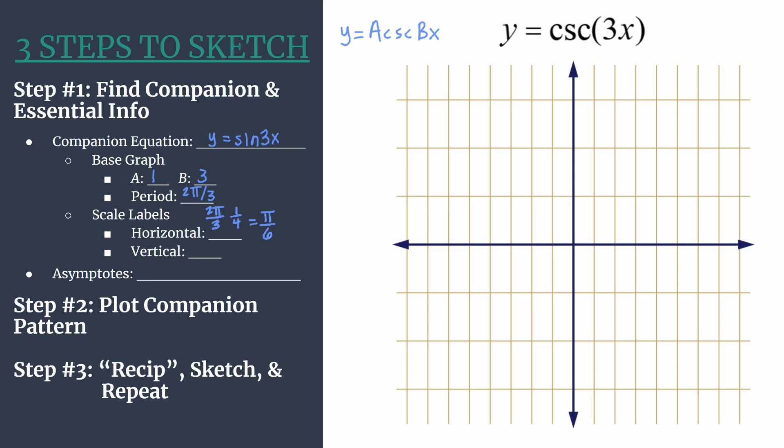Our vertical scale 1 usually works very well and it definitely does in this case. Let's take a minute to label our axes. We'll start with the horizontal axis, labeling counting by pi over 6. So that's 1 pi over 6.